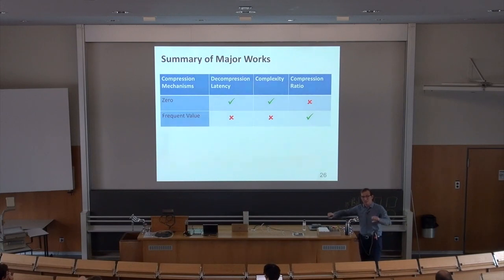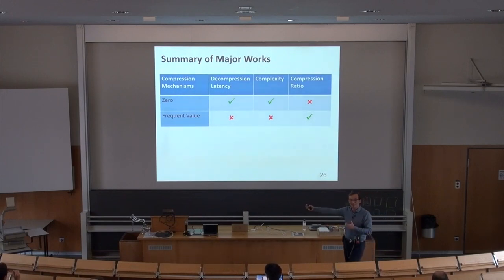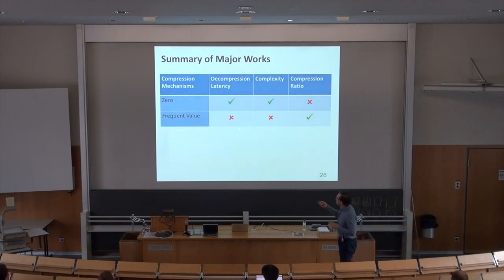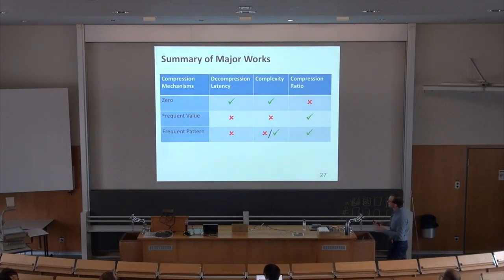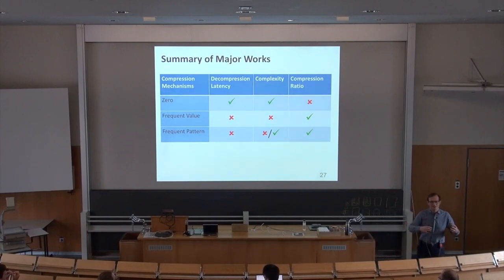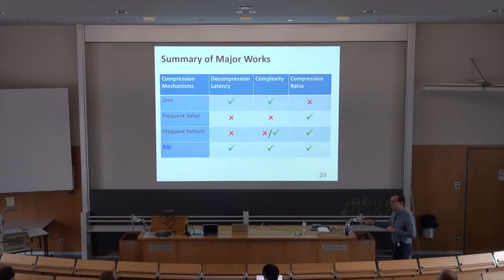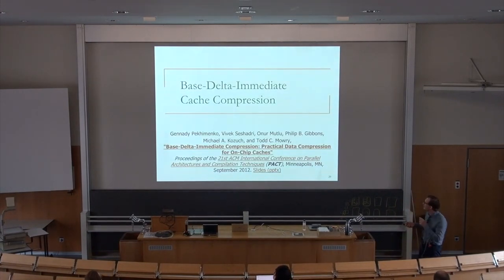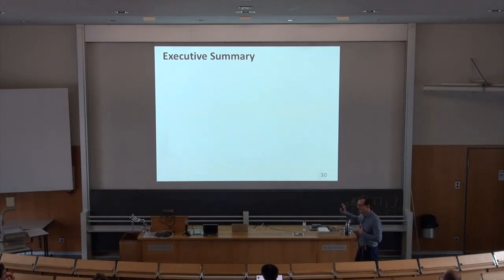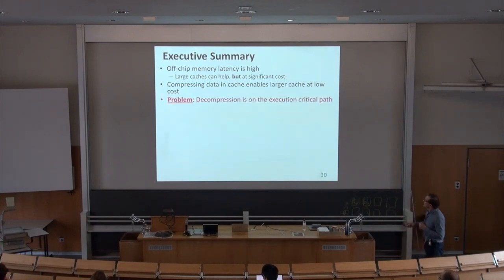For frequent value compression you add multiple bits to the tag encoding which frequent value this block holds, with a lookup table mapping codes to values. This can be static or dynamic; dynamic gives better ratios but more complexity. You also need more tags than data ways since compressed blocks don't occupy full ways. There's also frequent pattern compression, which encodes patterns like value-plus-offset rather than direct values. I'm going to describe a mechanism simpler than these that gets more benefit.